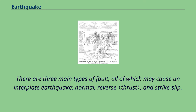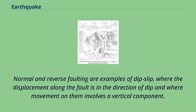There are three main types of fault, all of which may cause an interplate earthquake: normal, reverse, and strike-slip. Normal and reverse faulting are examples of dip-slip, where the displacement along the fault is in the direction of dip and where movement on them involves a vertical component.